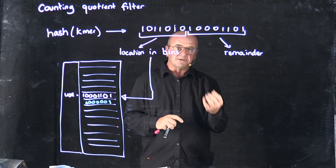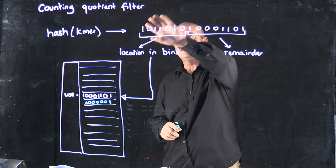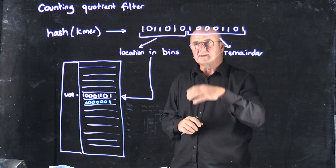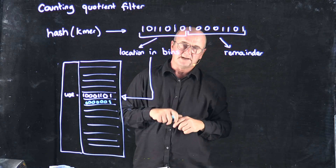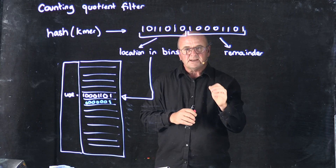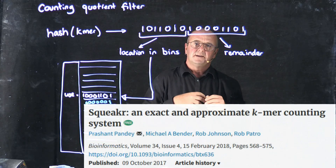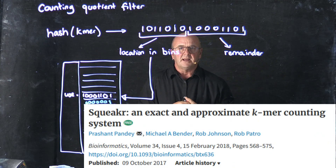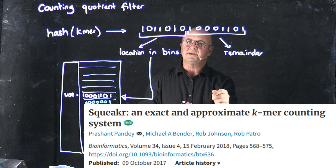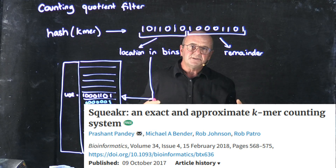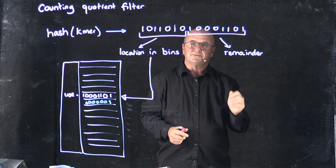The counting quotient filter is also an approximate member query because you can take a different k-mer and get the same location, or even the same location and remainder depending on your hash function. But it's been particularly effectively implemented in an algorithm called Squeaker from Pandey et al. It's a great way for counting k-mers as long as you don't need to know exactly how many there are. And for most use cases, just having an approximate answer — especially if it's quick — is all we need.